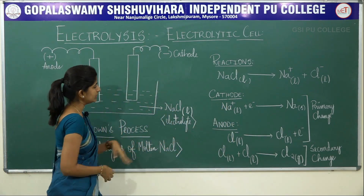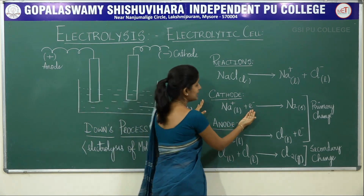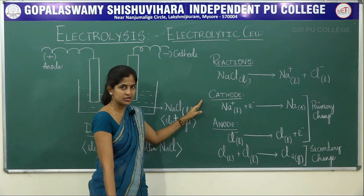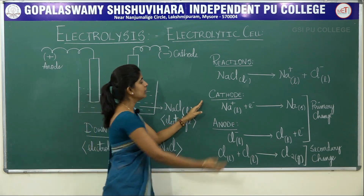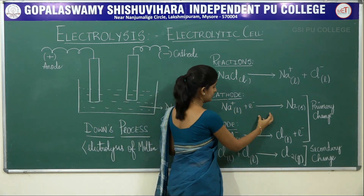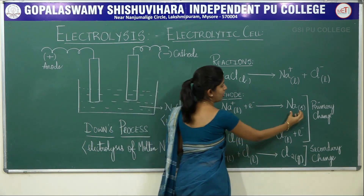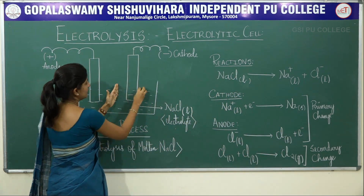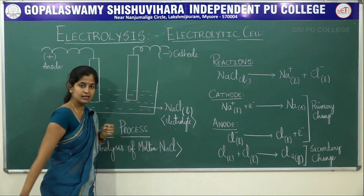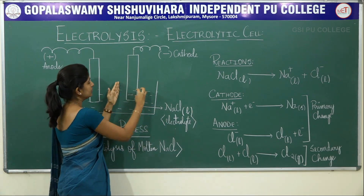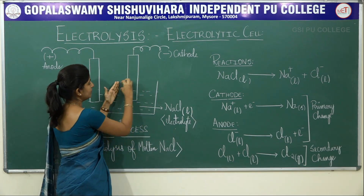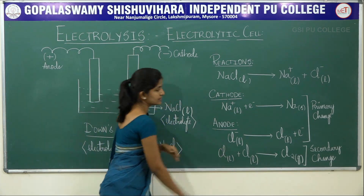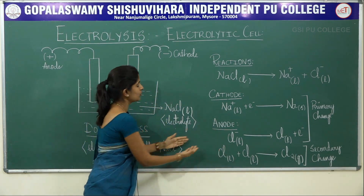At the cathode, there is addition of electrons, which is nothing but reduction. So Na⁺ undergoes reduction — it goes from liquid ionic form to solid metallic form, meaning that sodium metal is deposited all over the cathode electrode.